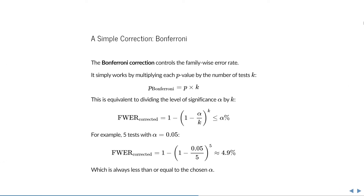The simplest correction is called the Bonferroni correction, which controls the family-wise error rate by multiplying each p-value by the number of tests k. This is actually the same as dividing the level of significance by the number of tests k. And when we see this formula, it implies that if we divide alpha by the number of tests, then the family-wise error rate — so the chance of at least one false positive among all our tests — is guaranteed to be equal to or less than the chosen level of significance. In other words, the chance of at least one false positive is guaranteed to be at most the level that you chose, which is what we want.